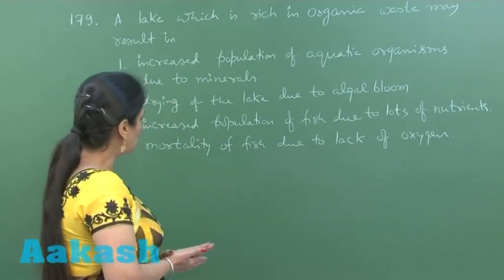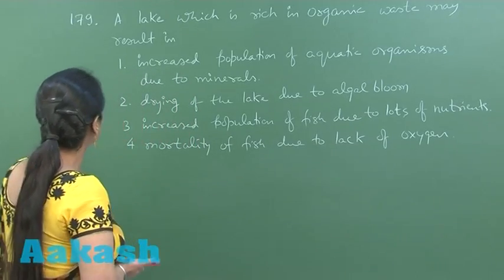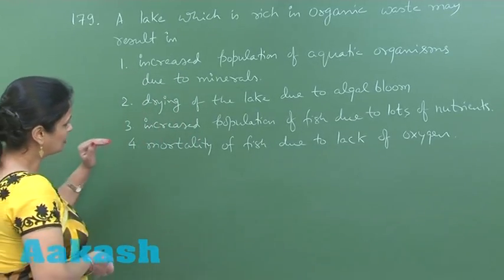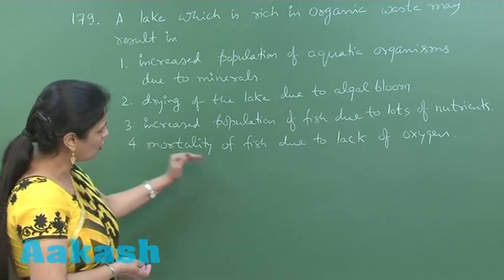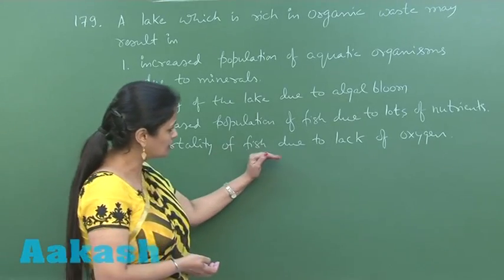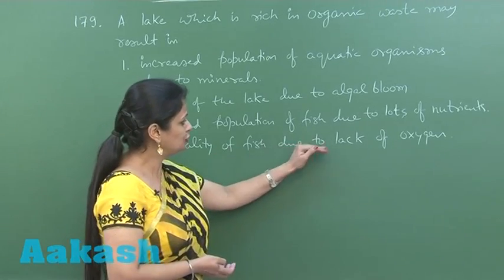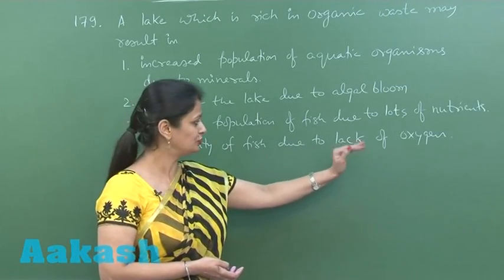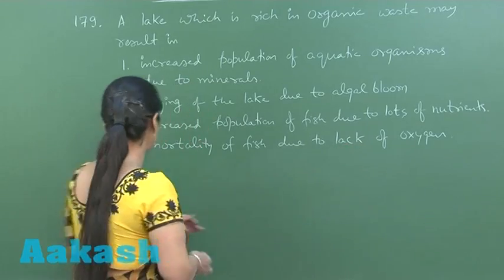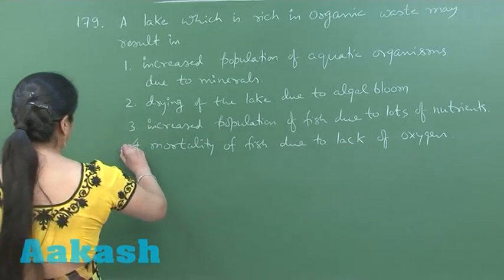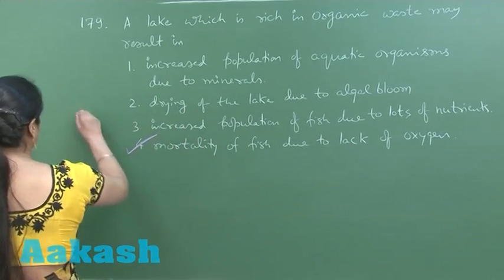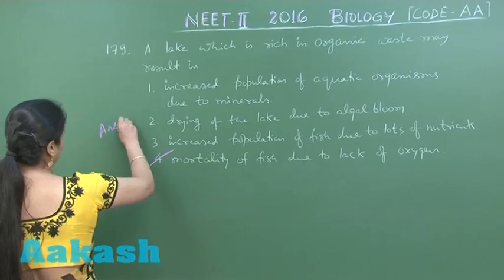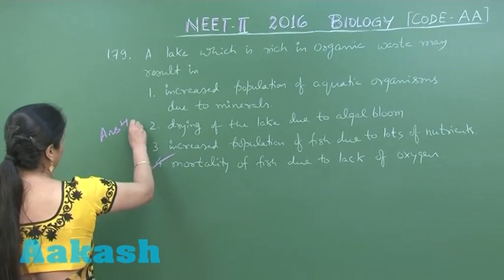The right option associated here is that mortality of fish occurs due to lack of oxygen — due to scarcity of oxygen. So the right option for this question is option number four.